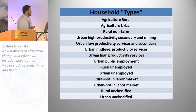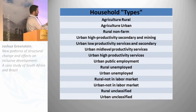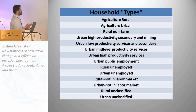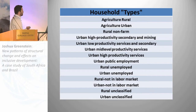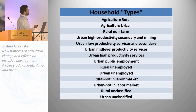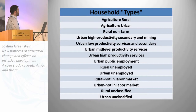These are the household insertion types. They're created using two criteria: whether it's a rural or urban location, and the employment of the household head. So for example, agricultural worker living in a rural area; high-productivity services living in an urban area; rural unemployed; rural not in labor market — and so on across the full list.